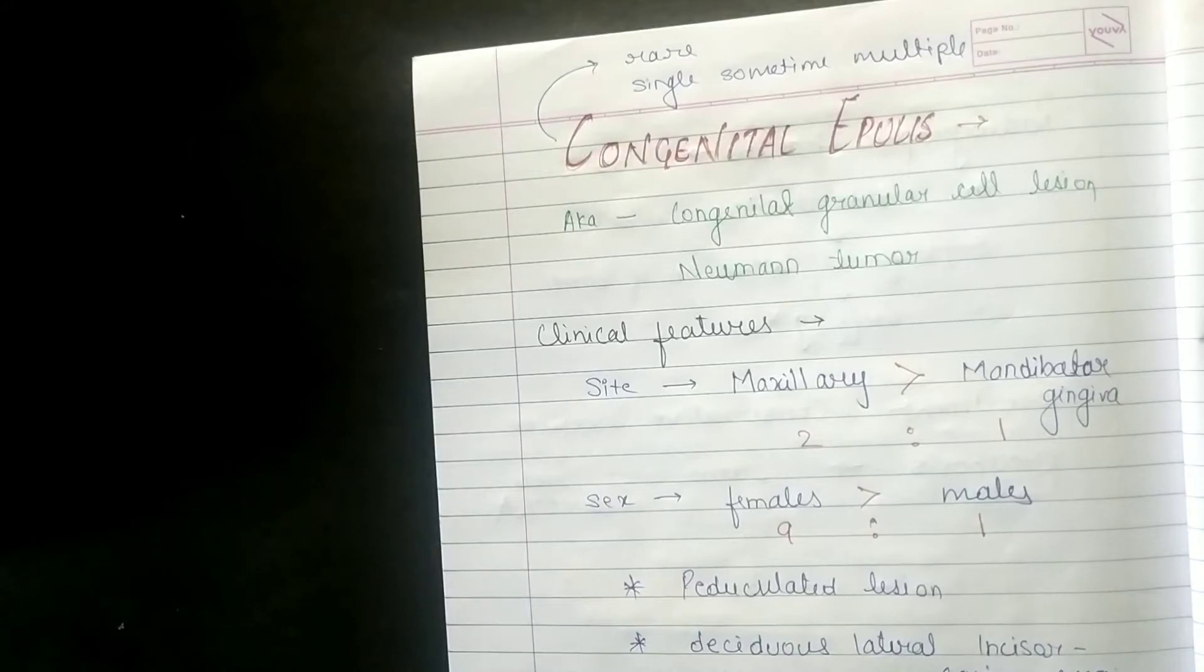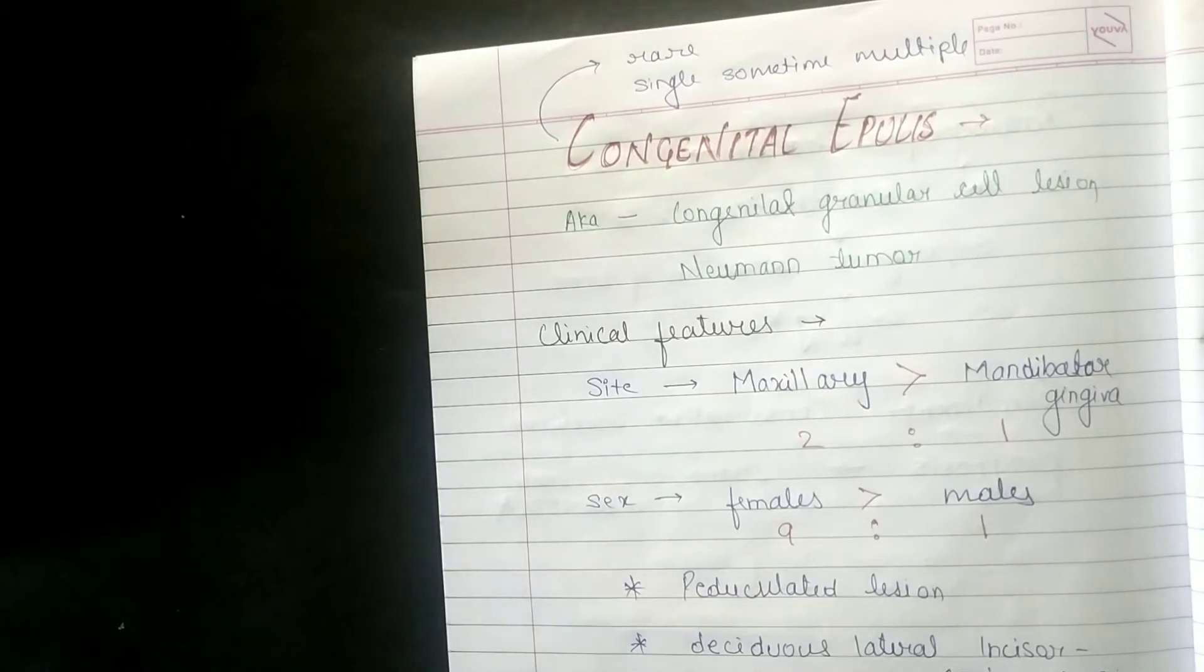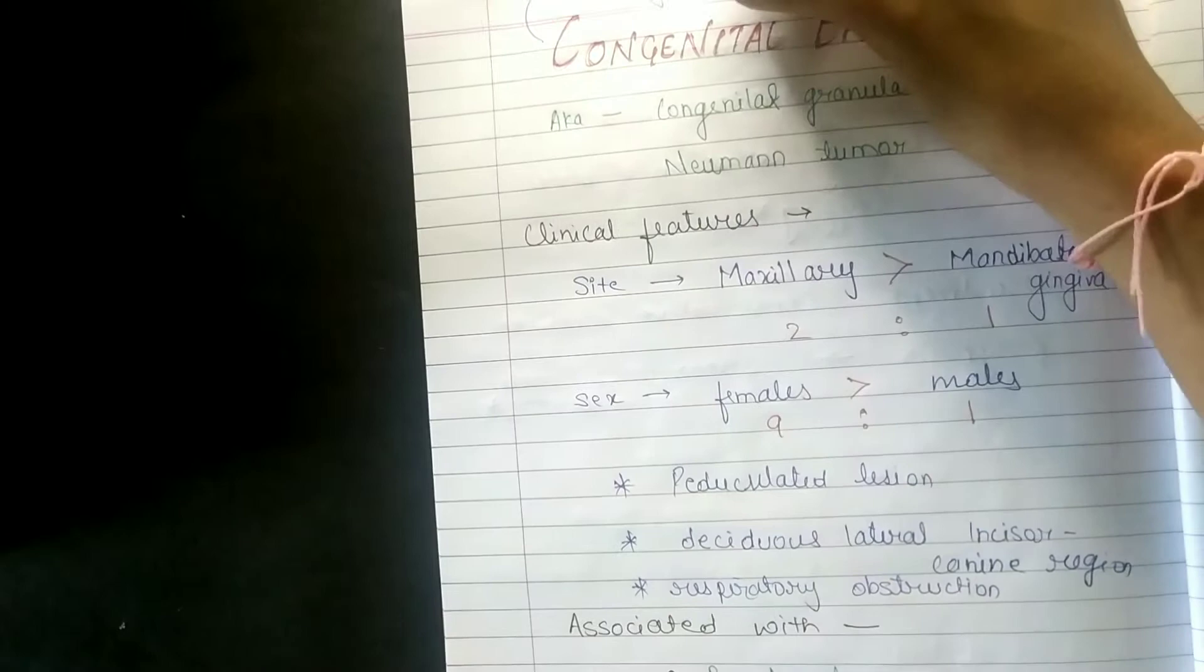Hello everyone, welcome to Study Art Motivation and Education. In this video we are going to discuss congenital epulis. It is also known as congenital granular cell lesion and Neumann's tumor. It is a very rare condition.